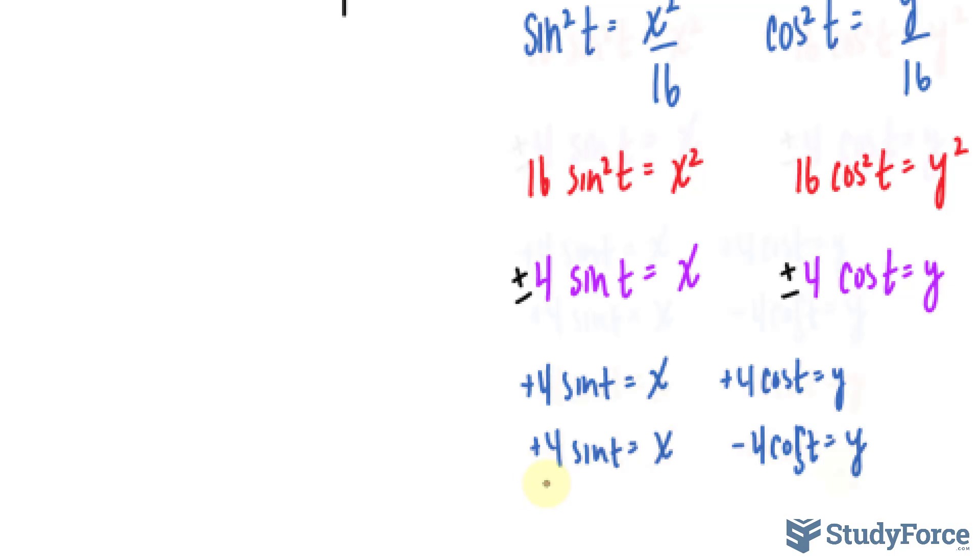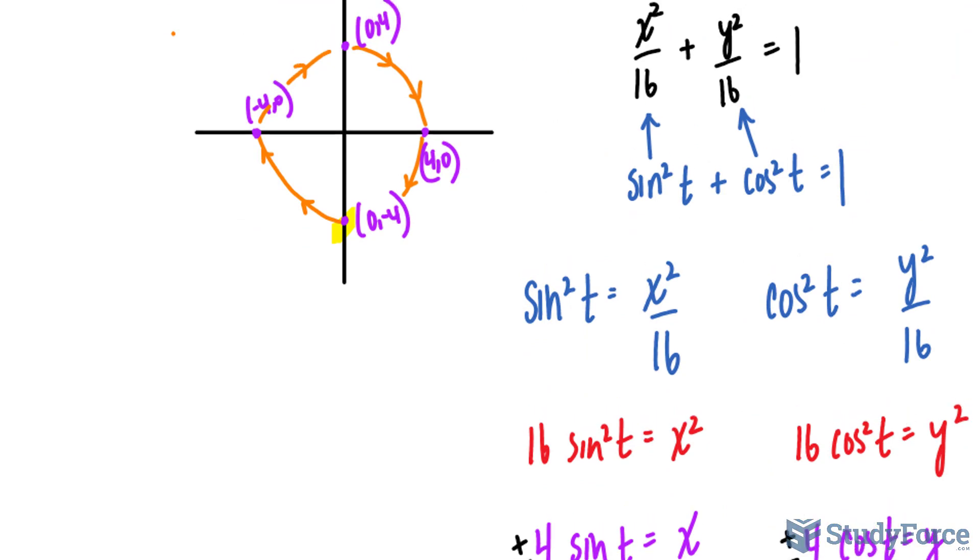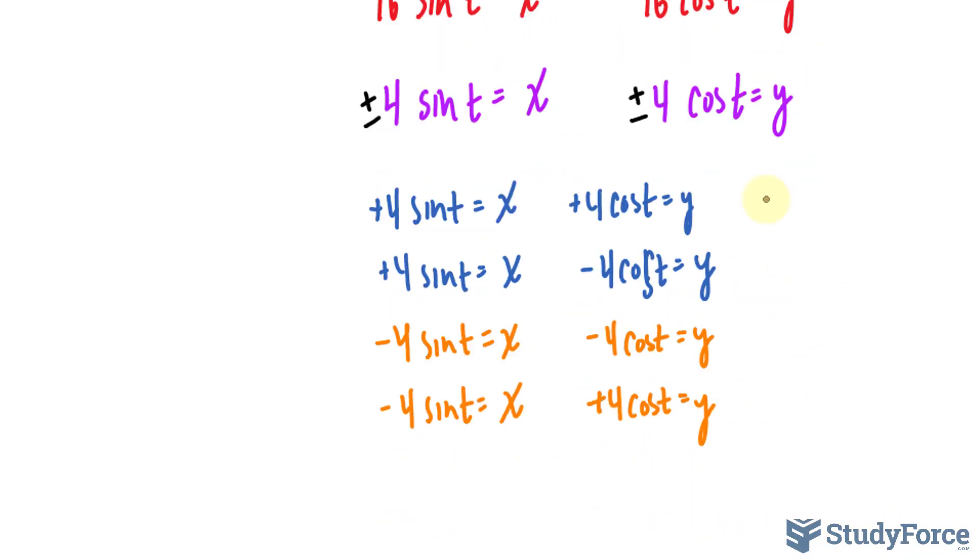You kind of get the idea here. And for each of these possibilities, given that we are dealing with a circle, and a circle goes between 0 and 2 pi radians, the restrictions will all be the same. It will be 0 is less than or equal to t, and t is less than or equal to 2 pi. And the same thing for each of these, the same restrictions.